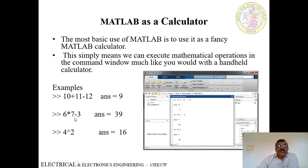Another example: 6 into 7 minus 3, and the answer for this is 39. And 4 to the power of 2 — the answer for this is 16.